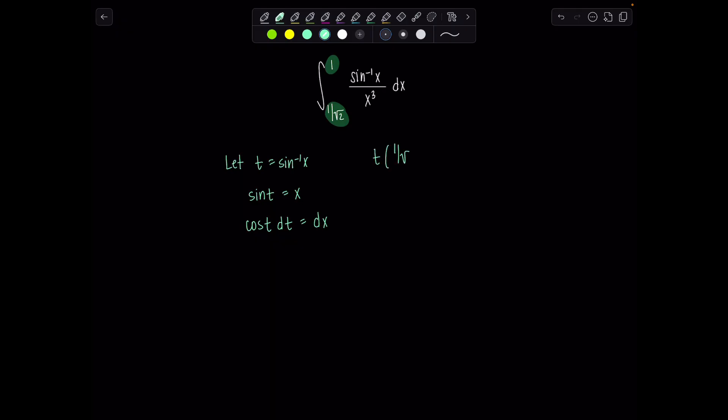So t of the lower limit, 1 over rad 2 would be sine inverse 1 over rad 2, which is very good, pi over 4. I already loved this problem because I was like, oh I can make sure my students know trig. And then t of 1, sine inverse of 1, which is pi over 2.